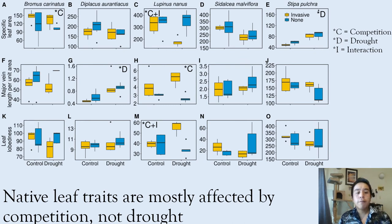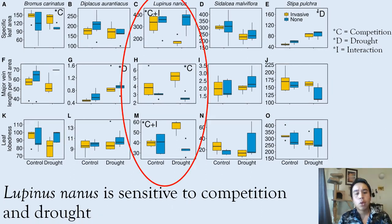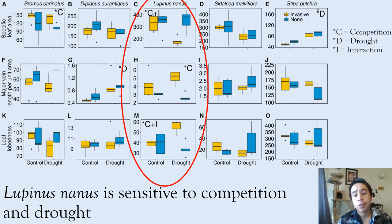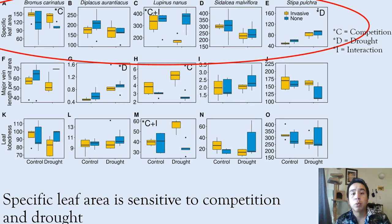We found that native leaf traits were mostly affected by competition and not drought — specifically referring to morphological leaf traits. In terms of physiological traits, those were primarily affected by drought and not competition. We found that Lupinus nanus, a nitrogen-fixing forb, was the most sensitive to competition and drought, possibly because they have greater trade-offs and requirements as nitrogen fixers. We found specific leaf area was the most responsive trait to competition and drought across the five species and three morphological traits we measured.